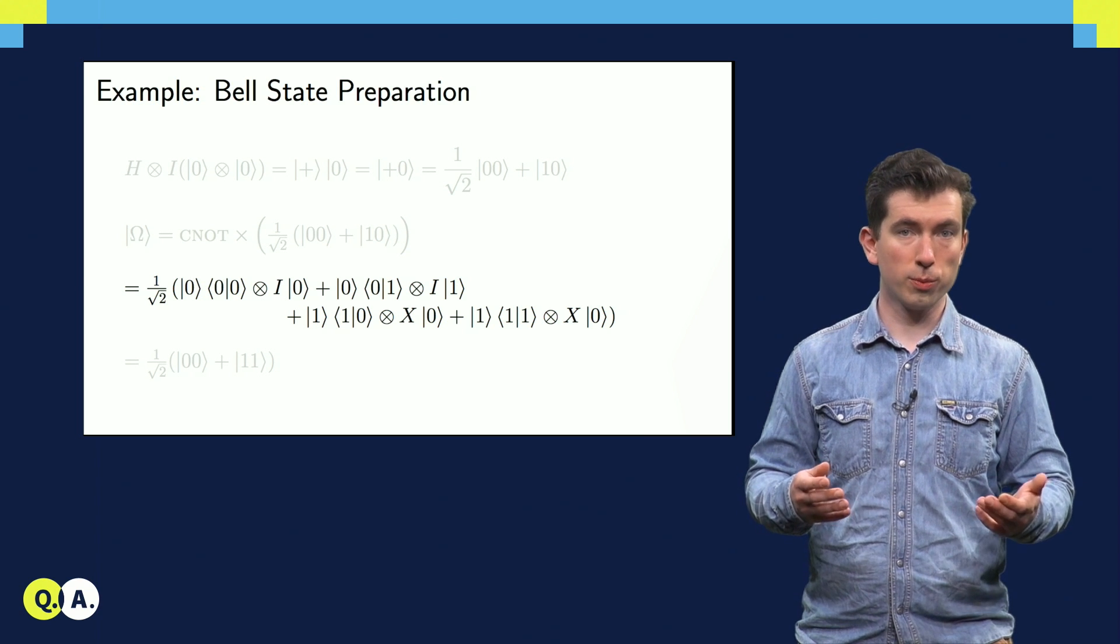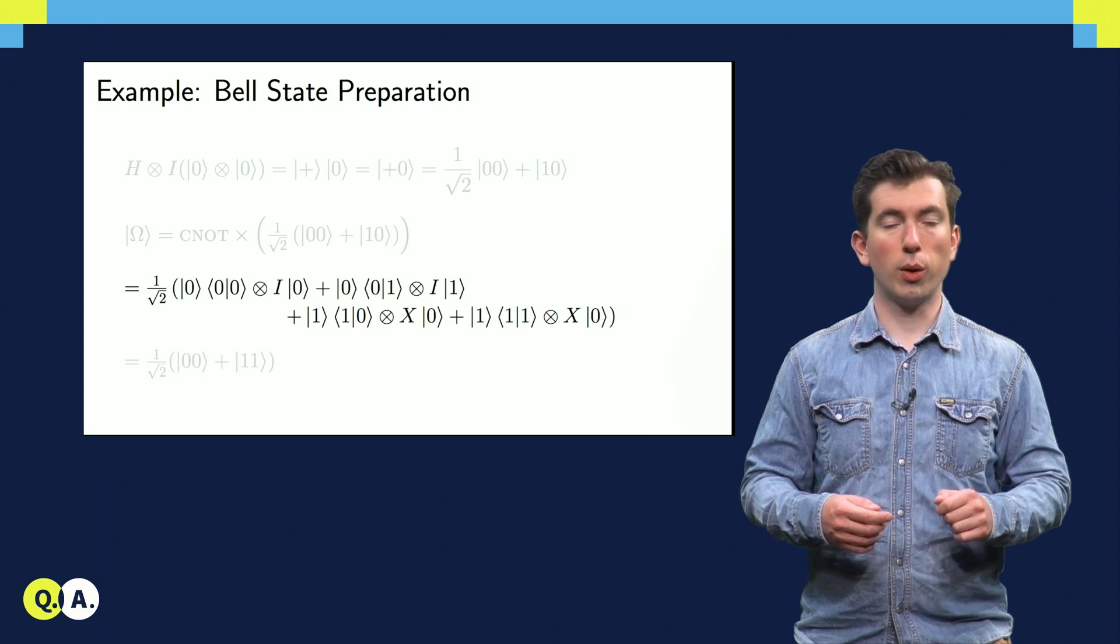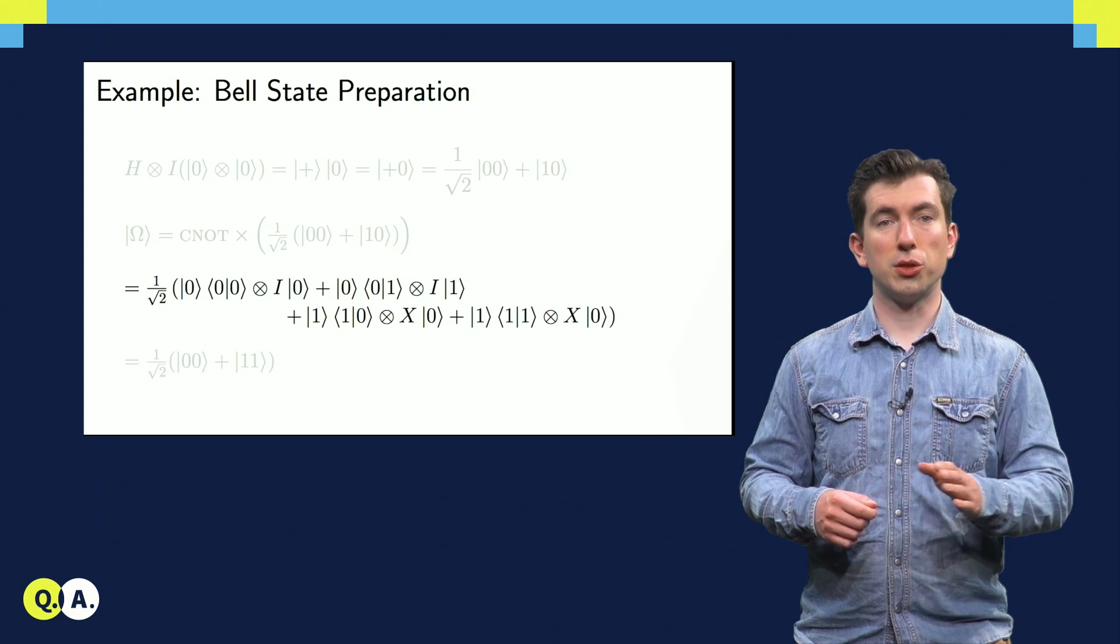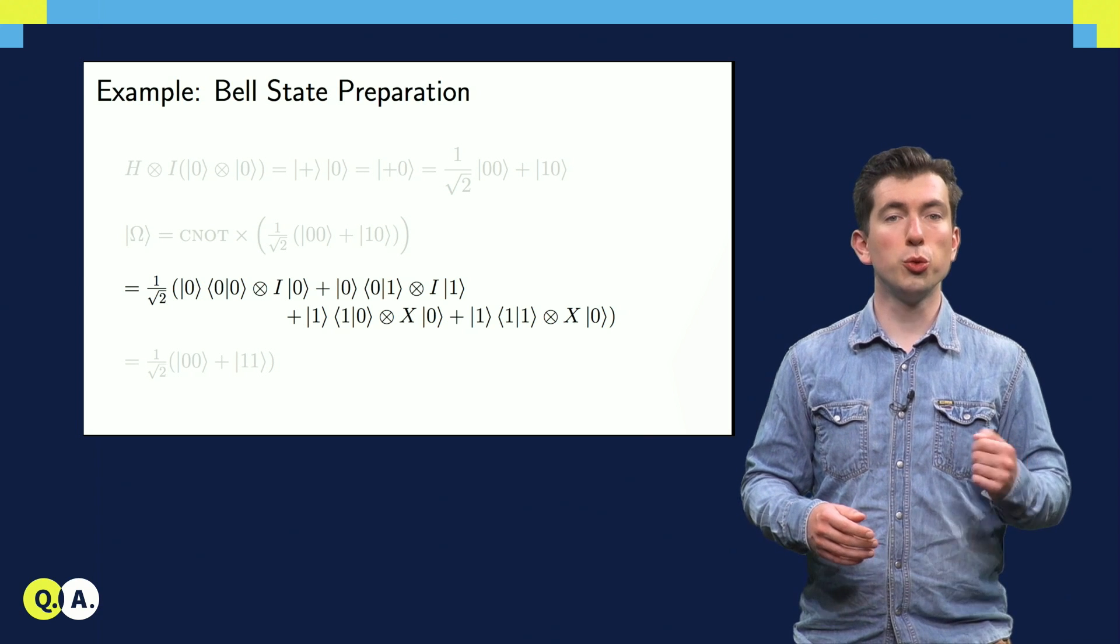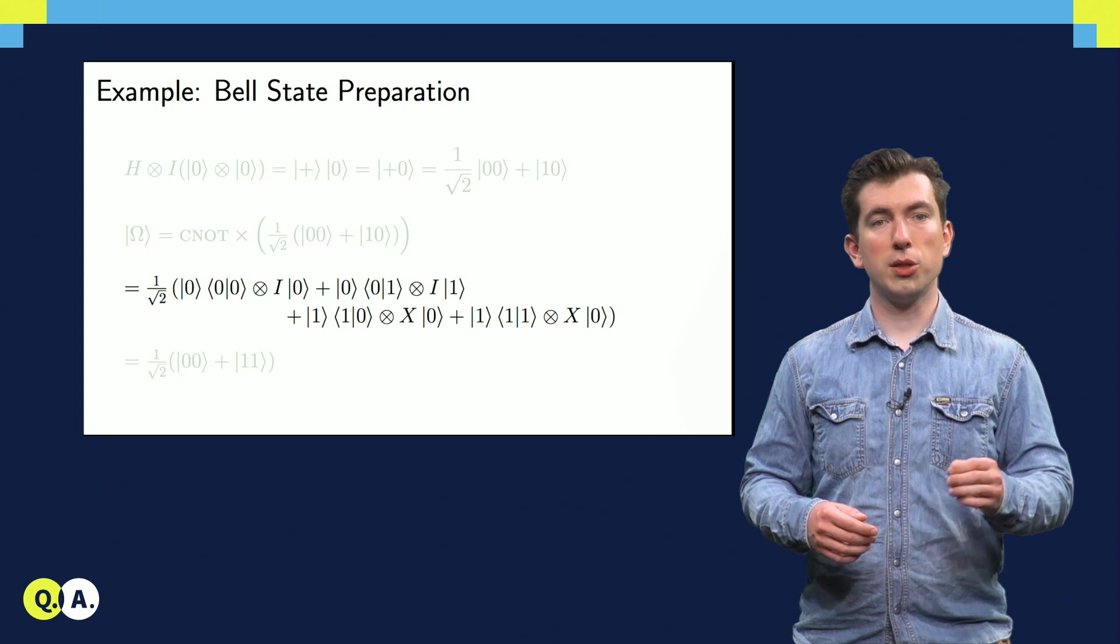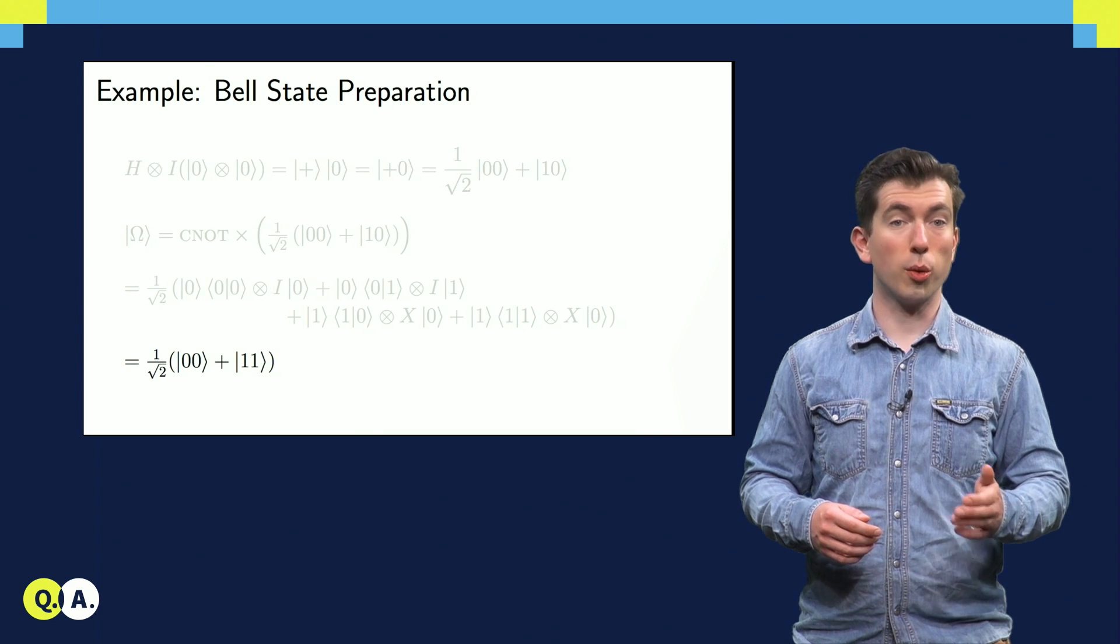Of course, the 0, 1 basis is orthonormal, so the products 00 and 11 evaluate to 1, and the products 01 and 10 evaluate to 0, leaving us with two remaining terms. These terms are exactly the 00 and 11 terms that we were after.